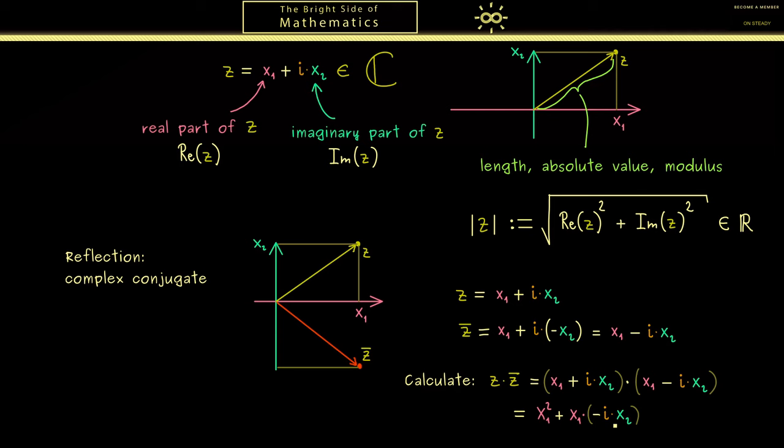Plus then i times x₂ times x₁. Plus finally minus i squared times x₂ squared. Or in short minus i squared x₂ squared.